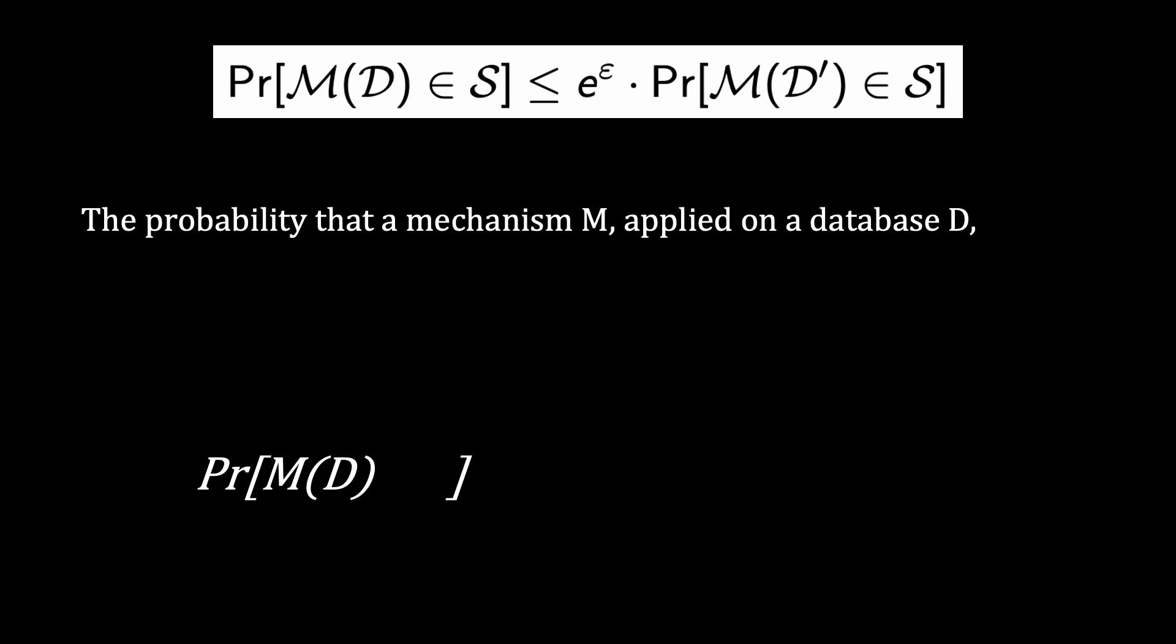Which is the original database, so the probability that it produces a certain output S is approximately the same if applied to a neighboring database which we now know what it is.